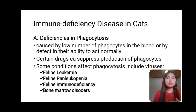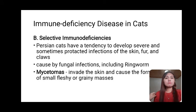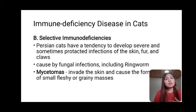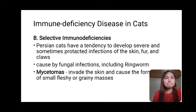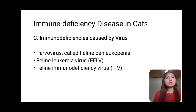Deficiencies in phagocytosis in cats are caused by a low number of phagocytes in the blood or defects in their ability to act normally. Certain drugs suppress the production of phagocytes. Conditions affecting phagocytosis include feline panleukopenia, feline immunodeficiency, and bone marrow disorders. Selective immunodeficiencies: Persian cats have a tendency to develop severe infections of the skin, fur, and claws caused by fungal infections including ringworm. Mycetomas invade the skin and cause formation of small, fleshy, or grainy masses. Immunodeficiencies caused by virus include feline parvovirus causing feline panleukopenia, feline leukemia virus (FeLV), and feline immunodeficiency virus (FIV).